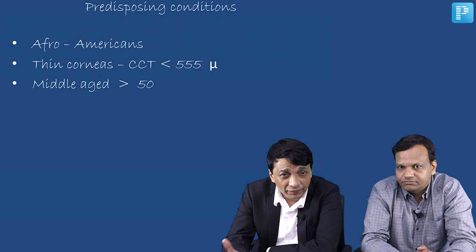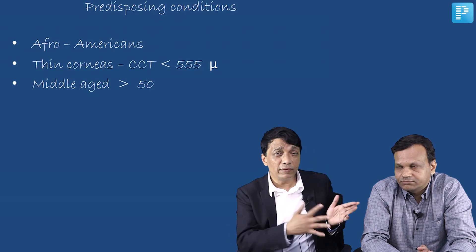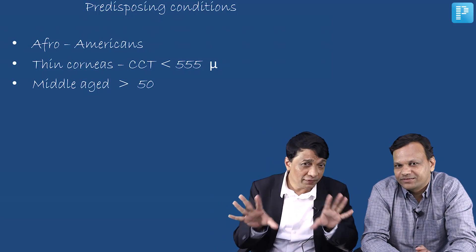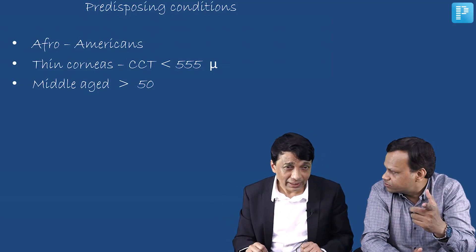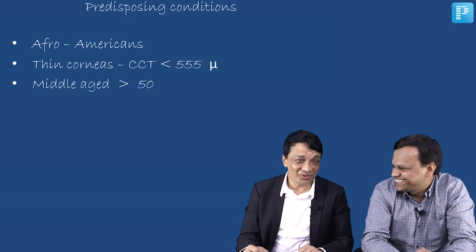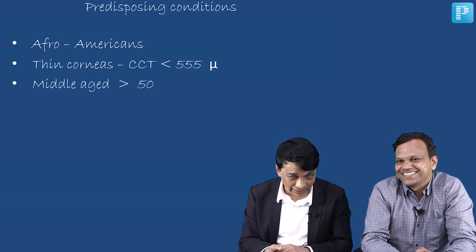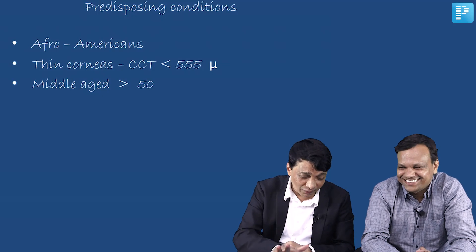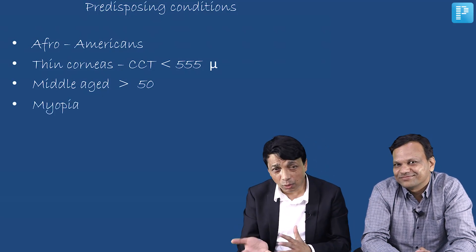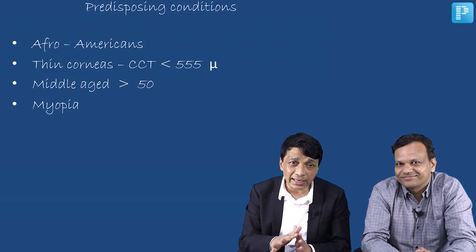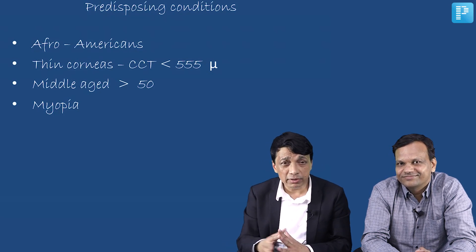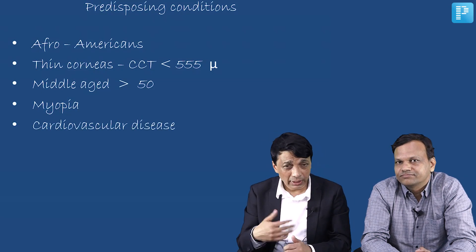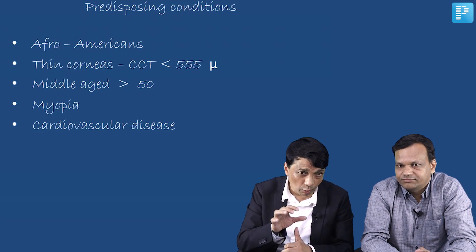Age is important — middle-aged, above 50 years. Myopics are also predisposed to glaucoma, usually those with minus 3 and beyond, called moderate myopia — they have been seen to develop glaucoma. Cardiovascular disease is also an important predisposing factor for glaucoma. These are some of the most important risk factors, though not all of them.